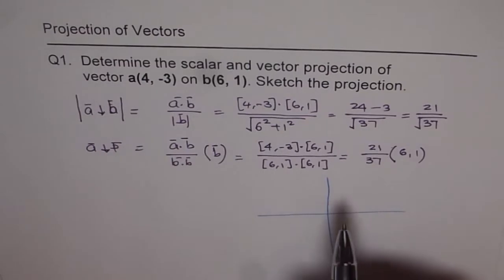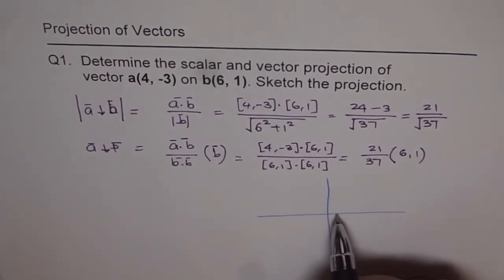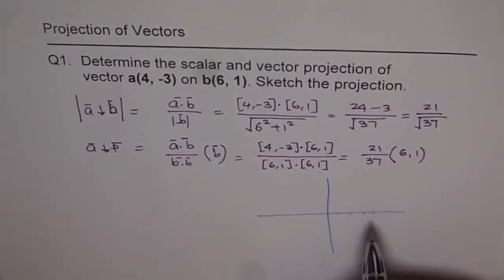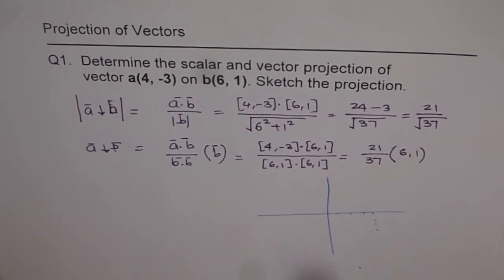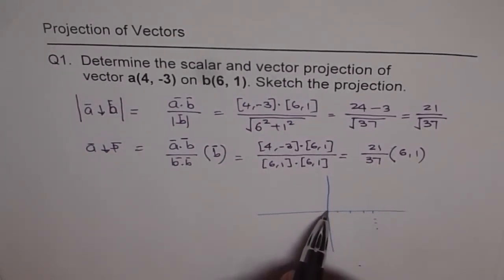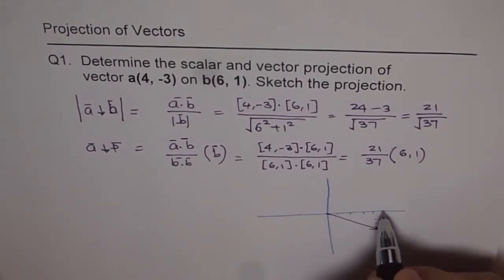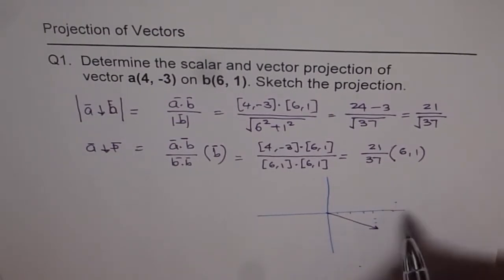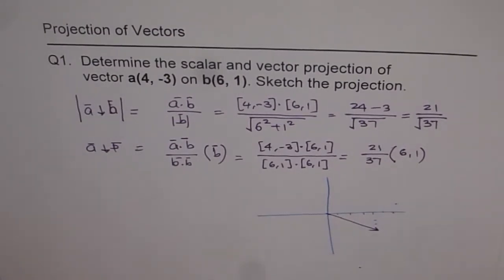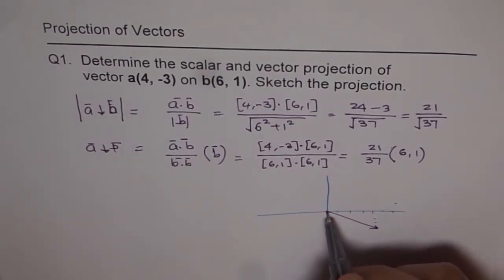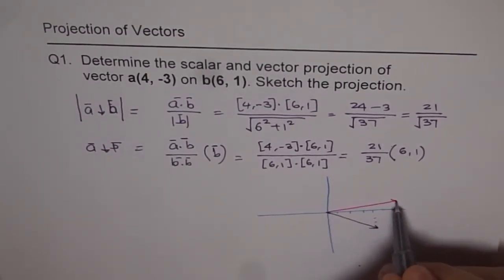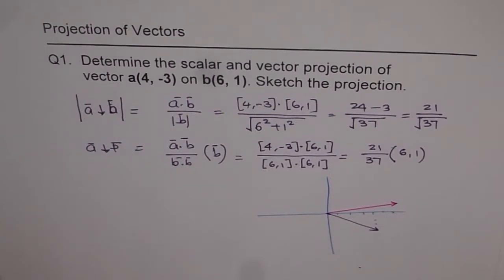So it's a rough sketch. We have vector A is (4,-3). So let's say 1, 2, 3, 4 and 1, 2, 3. So that is my vector A. And vector B is (6,1), so it's like 5, 6 and kind of here. Let me use a different ink for that. 6 and 1, so that is my vector B.